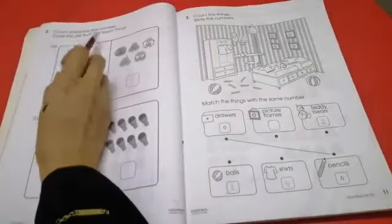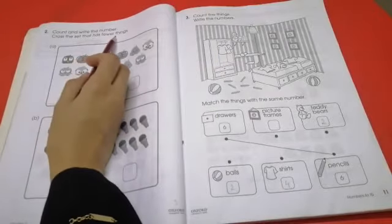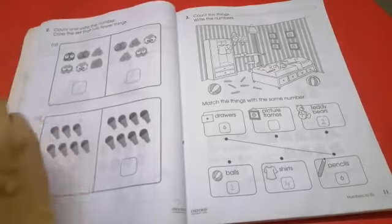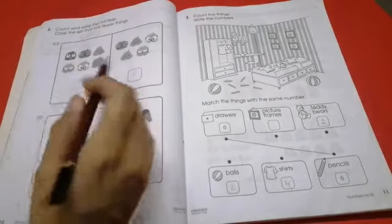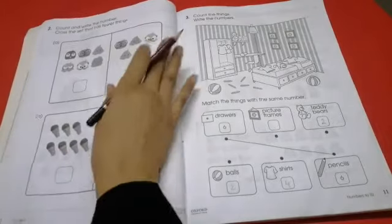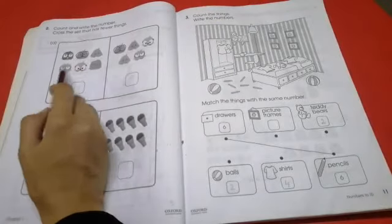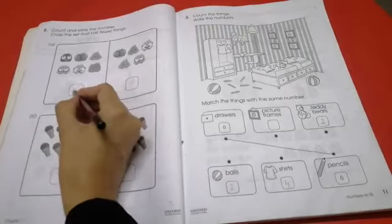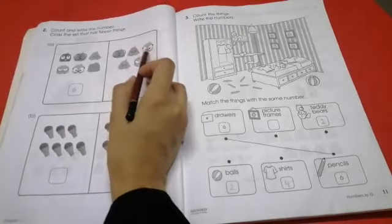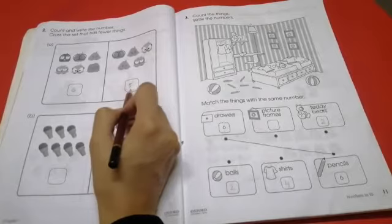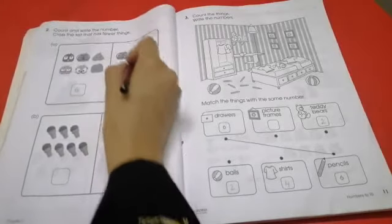Next, count and write the number. Cross a set that has fewer things. Now we have crossed that set. There are fewer things. Let's count. 1, 2, 3, 4, 5, 6. Next set: 1, 2, 3, 4, 5. 5 is fewer. So we will cross it down.